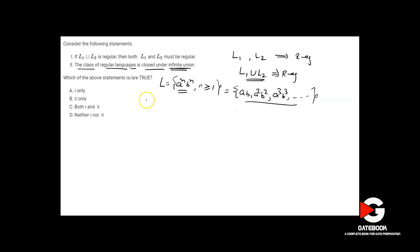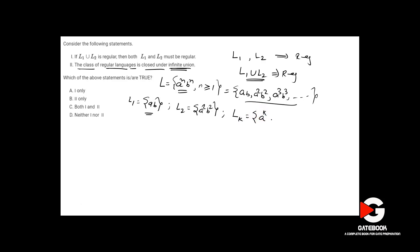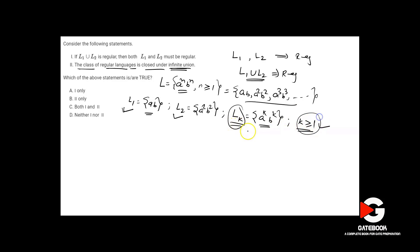Now define languages Lk for k ≥ 1, where each Lk contains only one string: a^k b^k. So L1 = {ab}, L2 = {a²b²}, L3 = {a³b³}, and so on. Each Lk contains exactly one string.